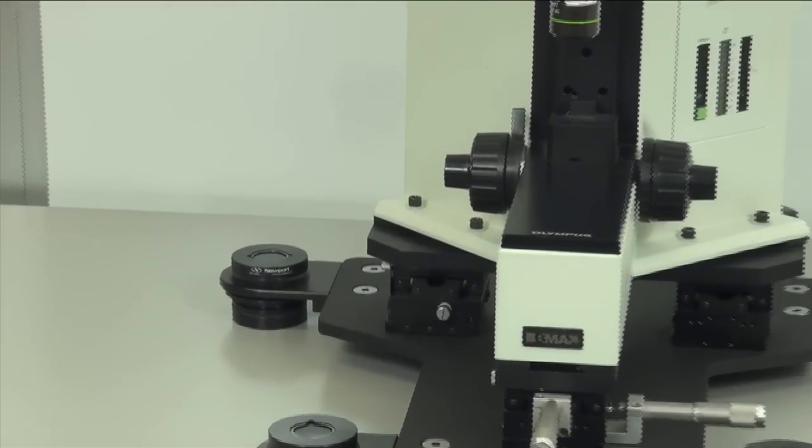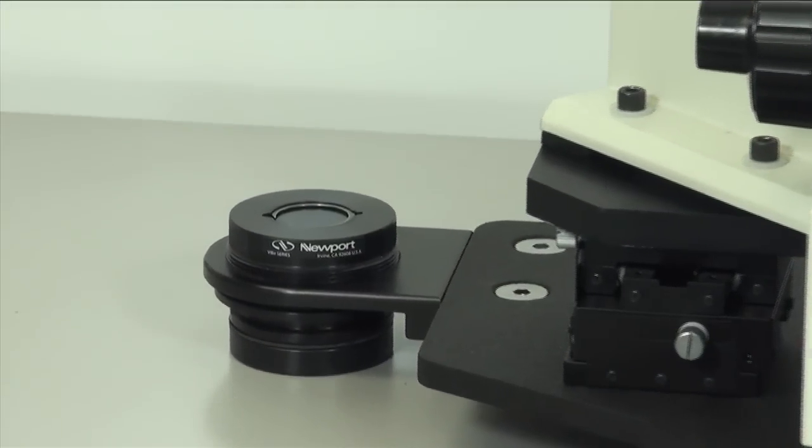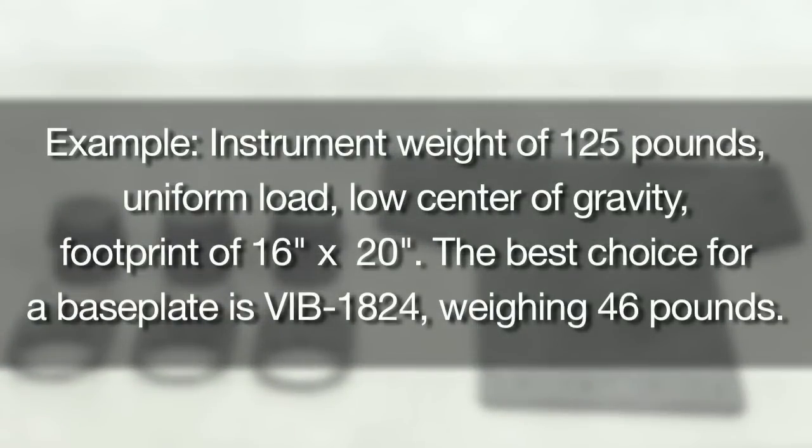After the base plate size and shape are selected, determine which IB bearings are needed to properly support and isolate your instrument. For example, consider an instrument that weighs 125 pounds, is a uniform load, has a low center of gravity, and has a footprint of 16 inches by 20 inches. The best choice for a base plate is the VIVE-1824, which weighs 46 pounds.